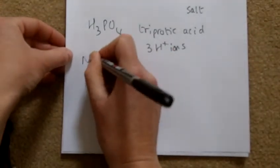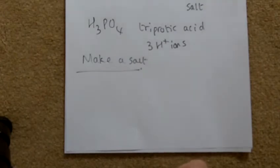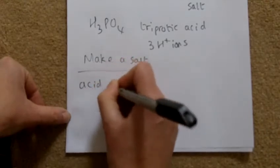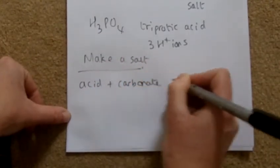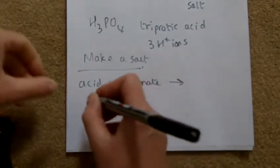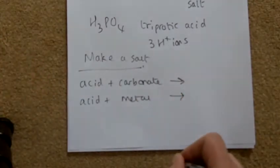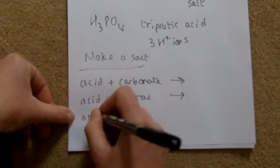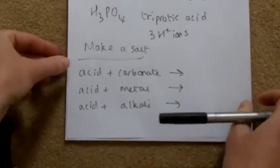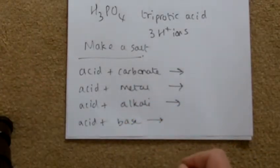In order to make a salt there are several ways. You're going to be doing an experiment on this. The four ways to make a salt are: an acid and a carbonate — for example calcium carbonate — makes a salt; an acid and a metal makes a salt; an acid and an alkali makes a salt; and an acid and a base makes a salt. You're going to be practising this experiment next week in your lesson.